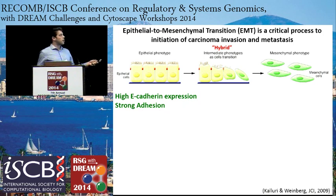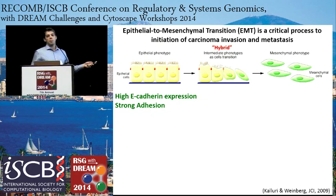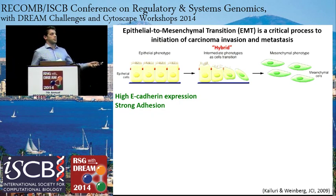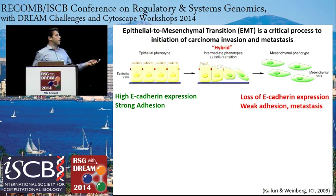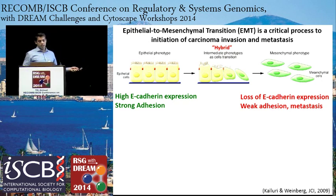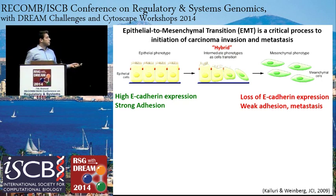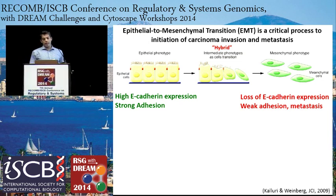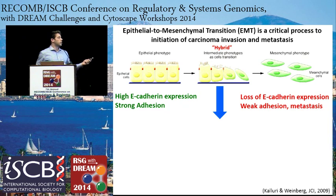More experimental papers as of late have been talking about hybrid or partial EMT phenotypes that are somewhere between the epithelial and mesenchymal state, and they're actually stable—they don't seem to be transient cellular states. The epithelial phenotype is characterized by high E-cadherin expression, which is a cell adhesion protein and is considered the hallmark of the phenotype.